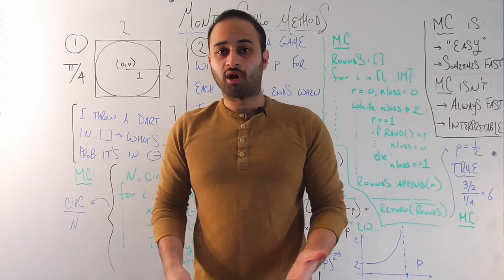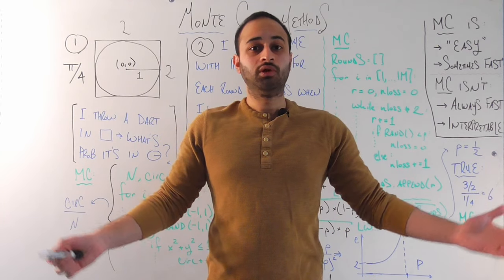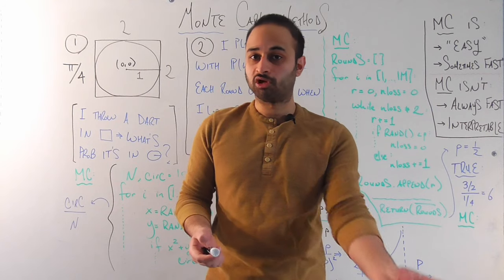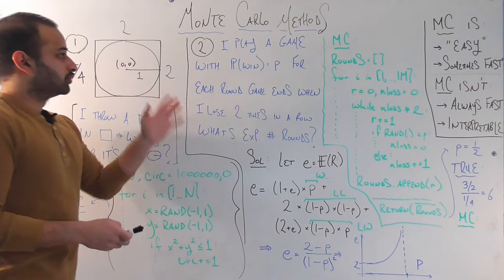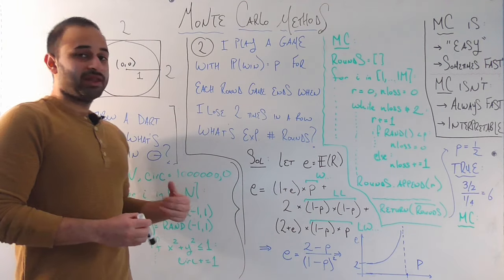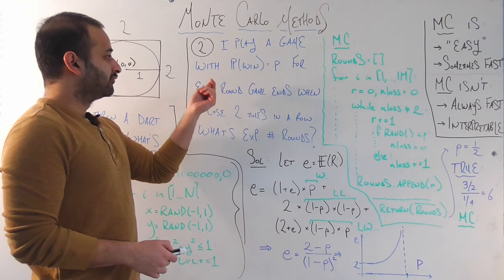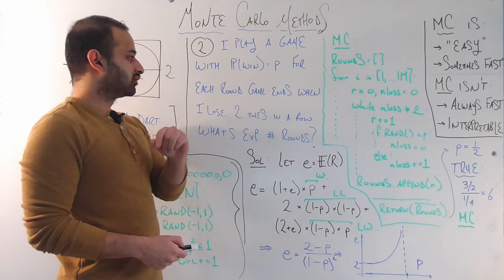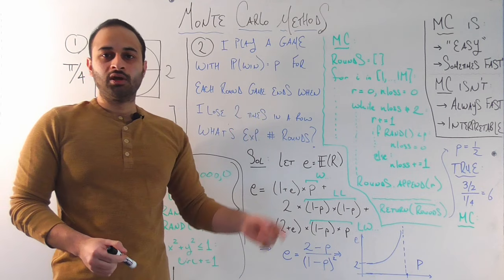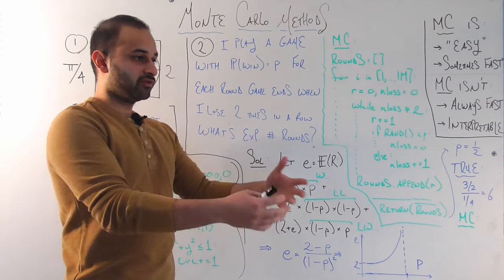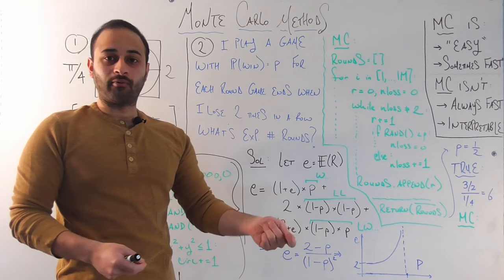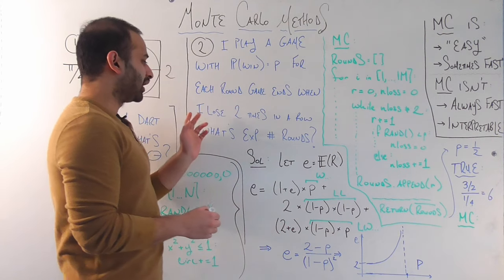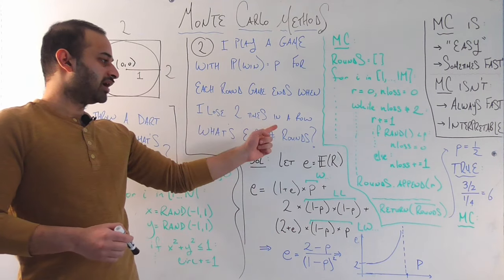Let's move on to the next example, because I think this one better highlights why we would choose to use a Monte Carlo method. The first problem wasn't too hard, so it's difficult to justify writing code for it. But with a harder problem — where we just don't know what to do — we can still get a really close answer using the Monte Carlo method. Example two: I play a game where the probability of winning a round is equal to little p for each round.